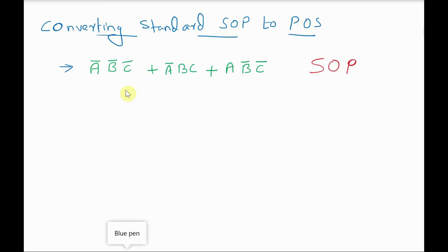In order to convert this SOP to POS expression, we will write the binary equivalent of these variables. Since this is a SOP expression, a variable with a bar represents 0, so A̅ is 0, B̅ is 0, C̅ is 0 — giving 0,0,0. The next term A̅BC gives 0,1,1, since variables without the bar are represented as 1. The last term AB̅C̅ gives 1,0,0. These are the three binary representations of the given SOP expression.